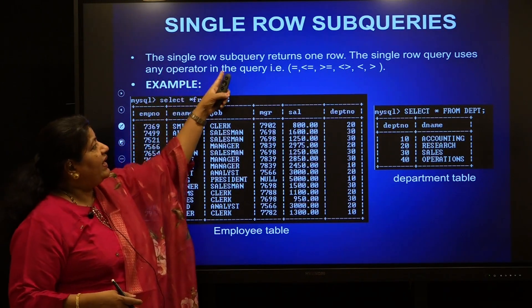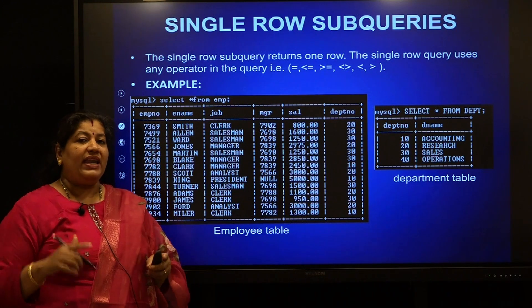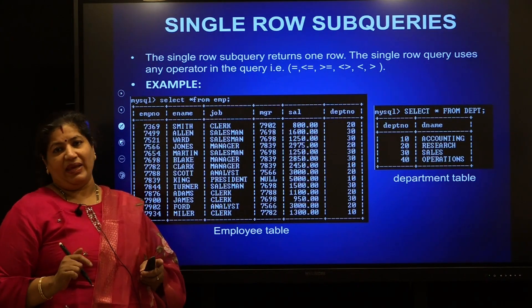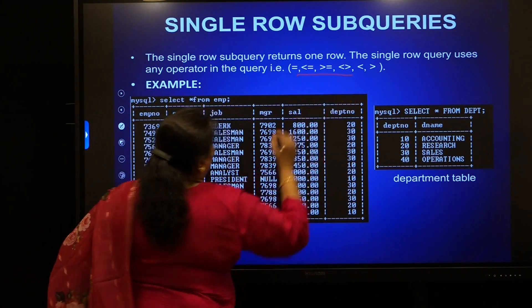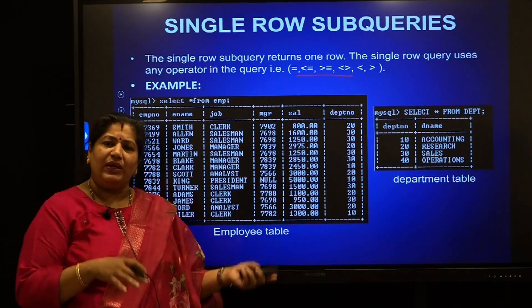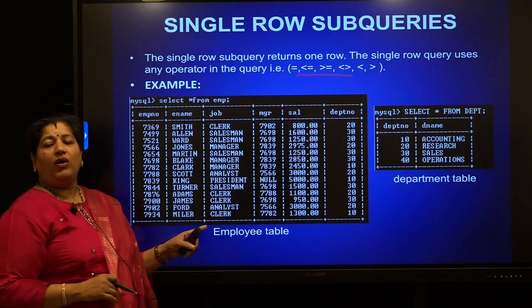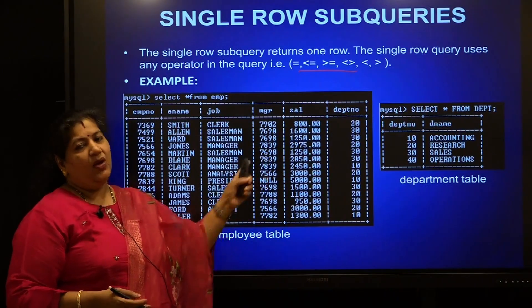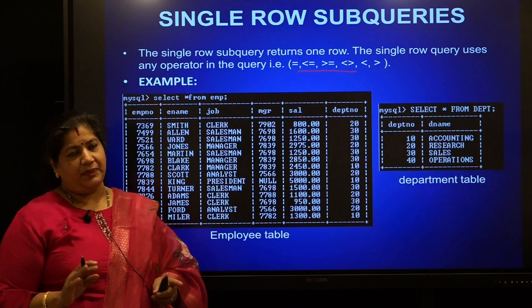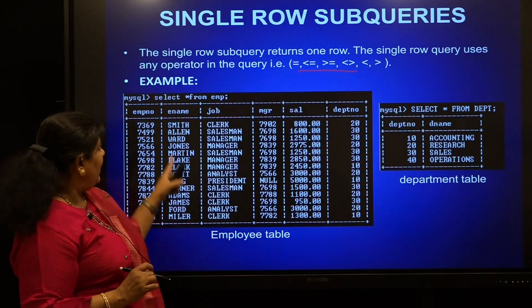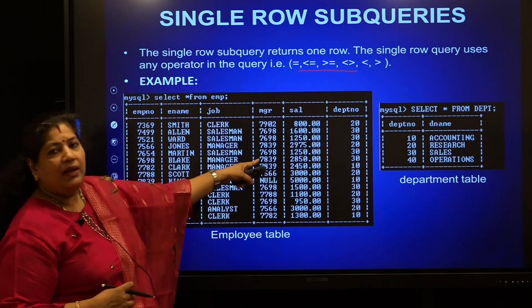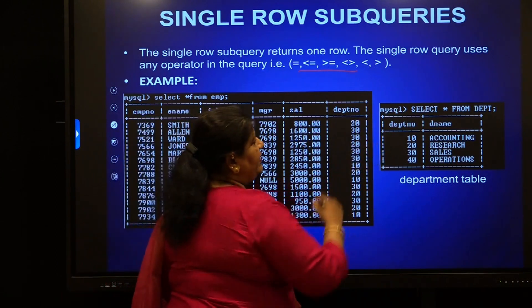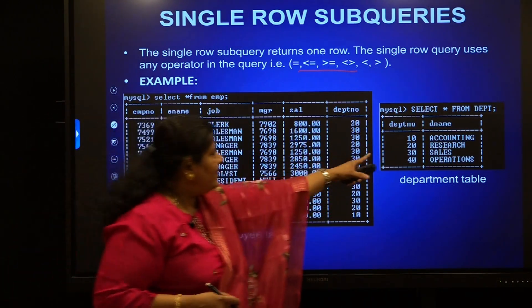Let us look into single row subqueries. Any query that returns one single row as the output is called a single row subquery, and comparison operators like equal to, greater than, less than, and not equal to will be used with it. Let me take the EMP and DEP table as the illustration table. The EMP table has EMP number, name, job, manager ID, salary, and department number.